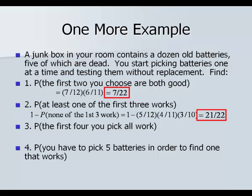Number three: find the probability that the first four we pick all work. The first has a 7 out of 12 chance, the next 6 out of 11, the third 5 out of 10, and the fourth 4 out of 9. Multiply these in your calculator: you should end up with 7 over 99.